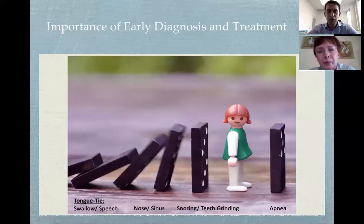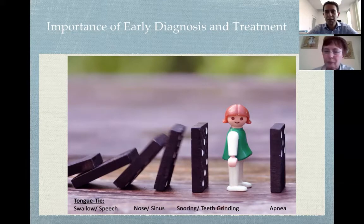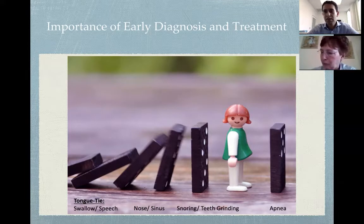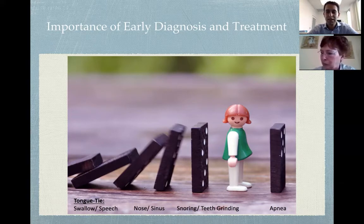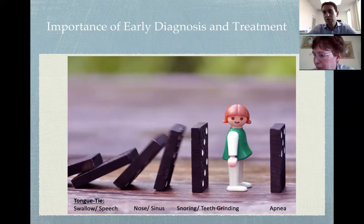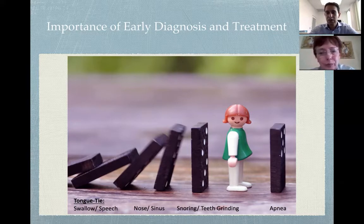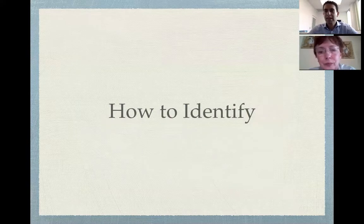This underscores the importance of identifying these issues early, because tongue tie issues may present in infants with swallow and speech issues. But if it goes undiagnosed, our recent studies show it can lead to underdevelopment of the maxillofacial skeleton as a risk factor for nasal breathing limitations, sinus issues, and later causing functional and structural issues that affect the airway, leading to snoring, teeth grinding, and eventually sleep apnea. Sanda, tell us how we can identify signs of oral myofascial disorders.